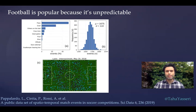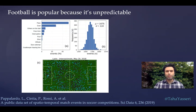A lot happens in a single match, with some studies identifying around 1600 different events in a single match. And because a lot is going on, it's very difficult to predict outcomes, and that's the main reason behind the popularity of the sport.